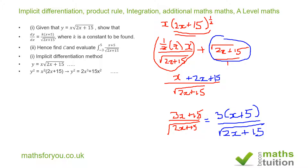So y squared equals 2x cubed plus 15x squared when you expand the brackets. Now differentiating both sides by implicit differentiation: 2y dy equals 6x squared — since differentiating 2x cubed gives 6x squared — plus 30x dx, since differentiating 15x squared gives 30x.